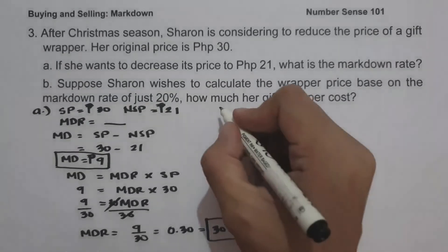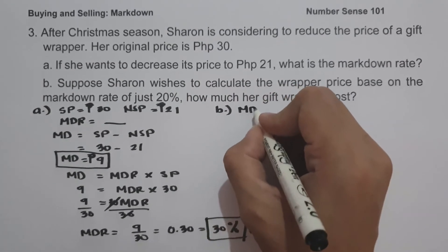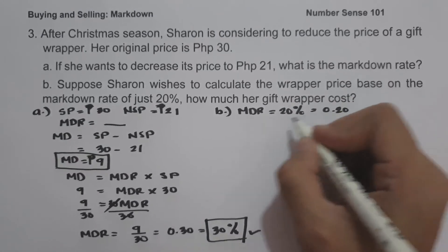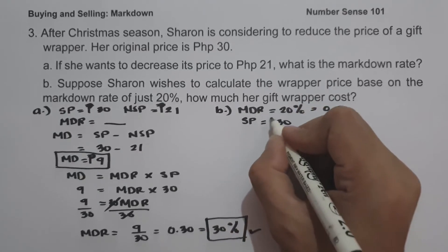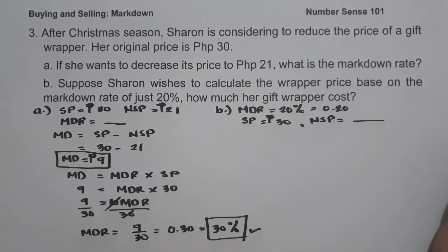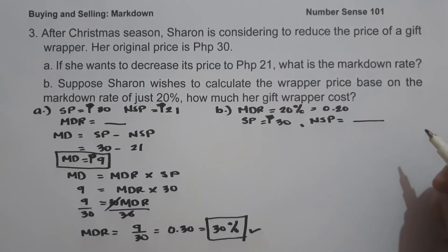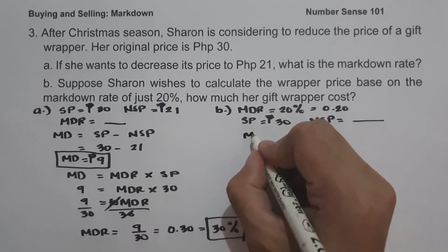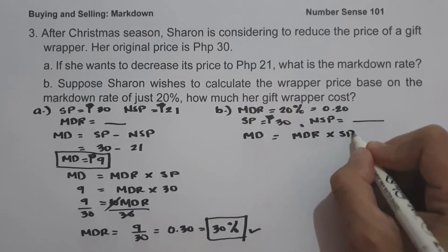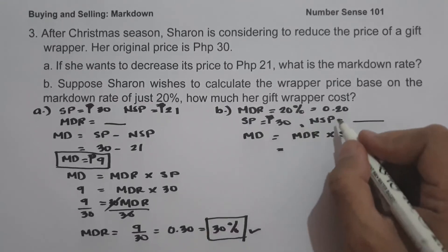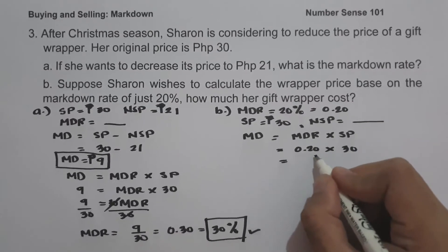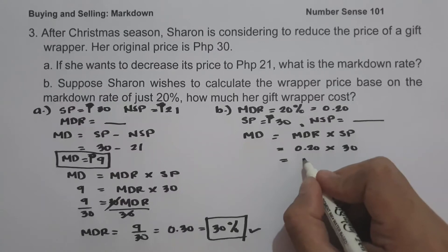On letter B, suppose Sharon wishes to calculate the wrapper price based on a markdown rate of just 20%. We have markdown rate of 20% or 0.20, and selling price of 30 pesos, and we are looking for the new selling price. To find the markdown: markdown equals markdown rate times selling price, so 0.20 times 30 equals 6 pesos. This is our markdown.